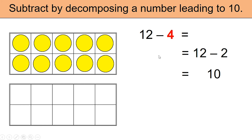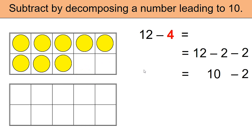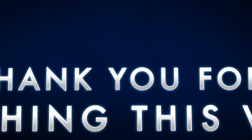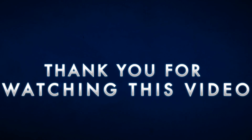Remember, we needed to remove 4 but we only removed 2, which means we need to remove 2 more. Let's go ahead and do that now. We are now left with 8. 12 minus 4 is equal to 8.